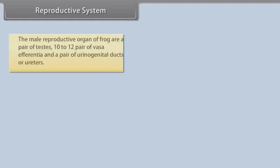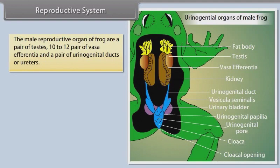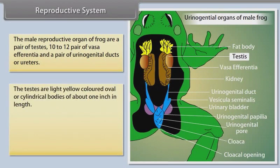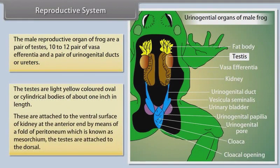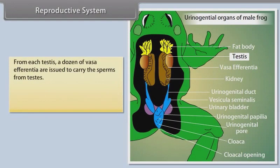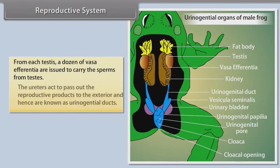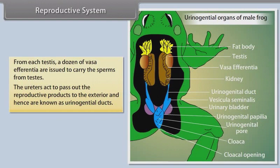Reproductive System. The male reproductive organs of frog are a pair of testes, 10 to 12 pairs of vasa afferentia, and a pair of urogenital ducts or ureters. The testes are light yellow-colored, oval or cylindrical bodies of about one inch in length. These are attached to the ventral surface of the kidney at the anterior end by means of a fold of peritoneum known as mesorchium. From each testis, a dozen vasa afferentia carry sperm from the testes. The ureters act to pass out the reproductive products to the exterior and hence are known as urogenital ducts.